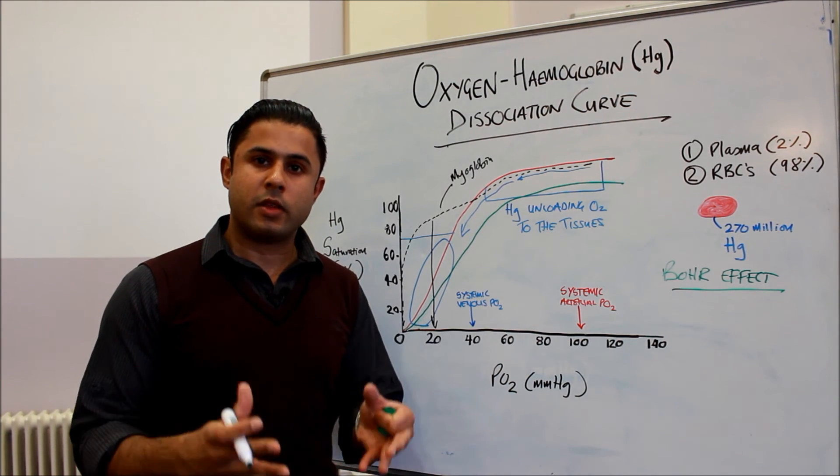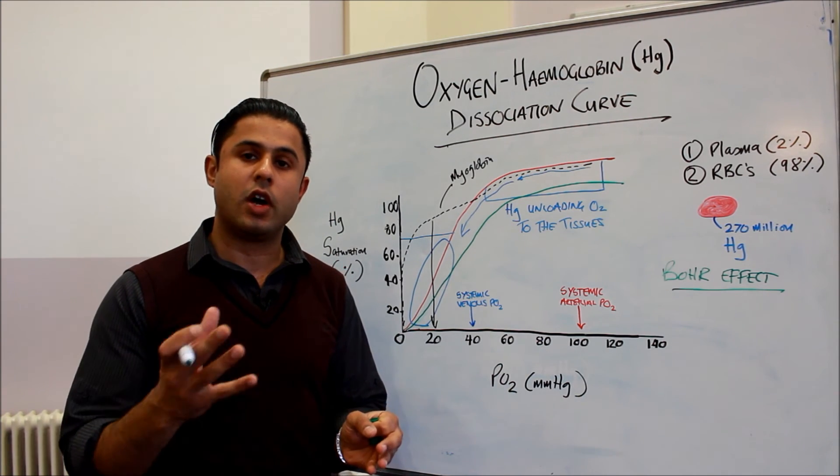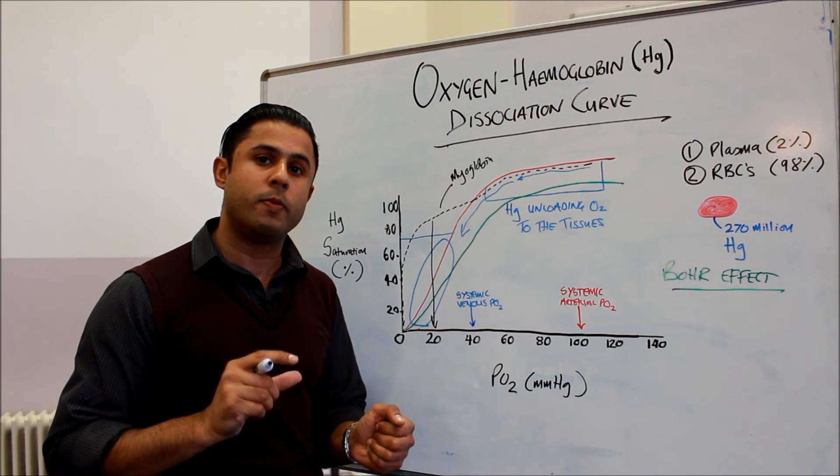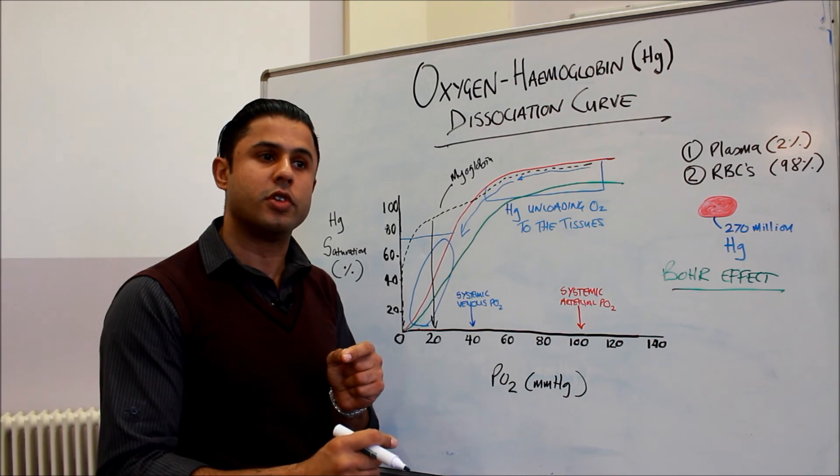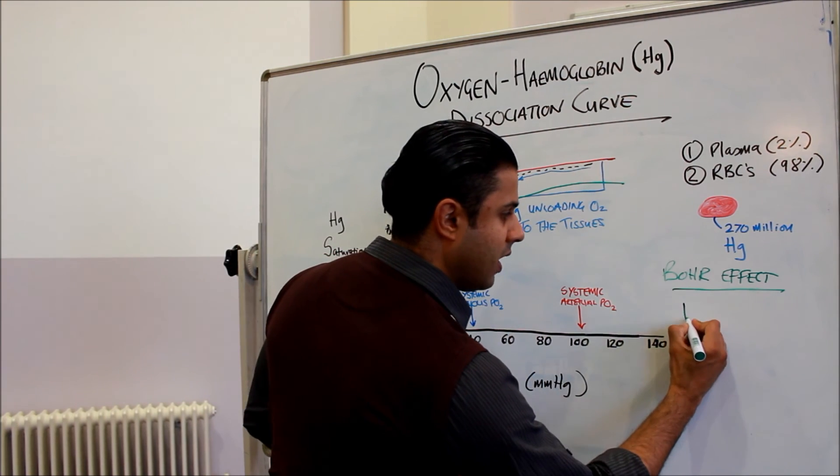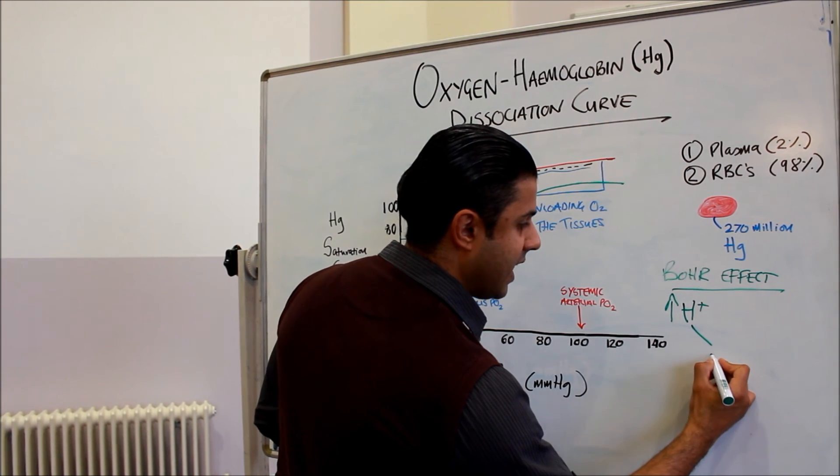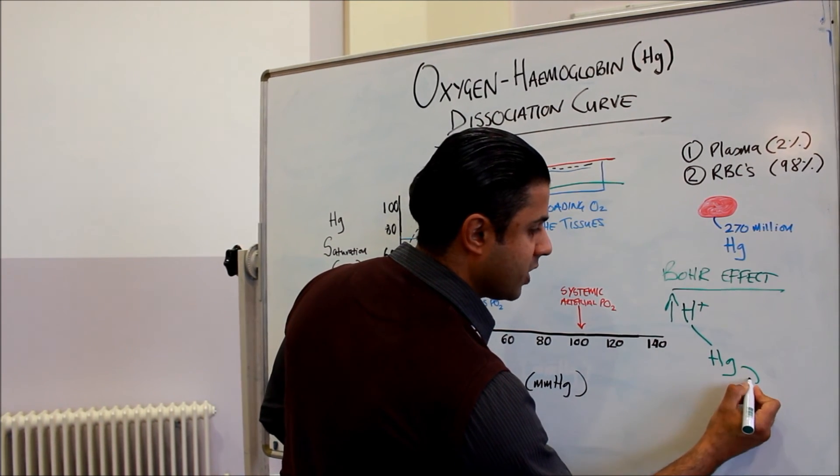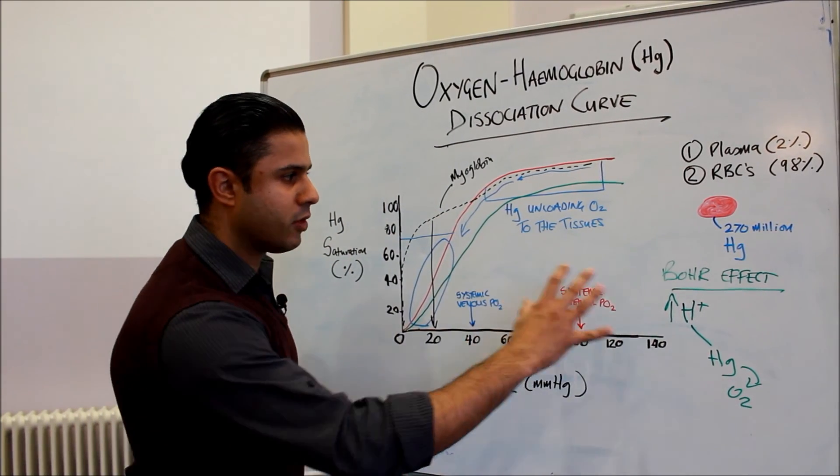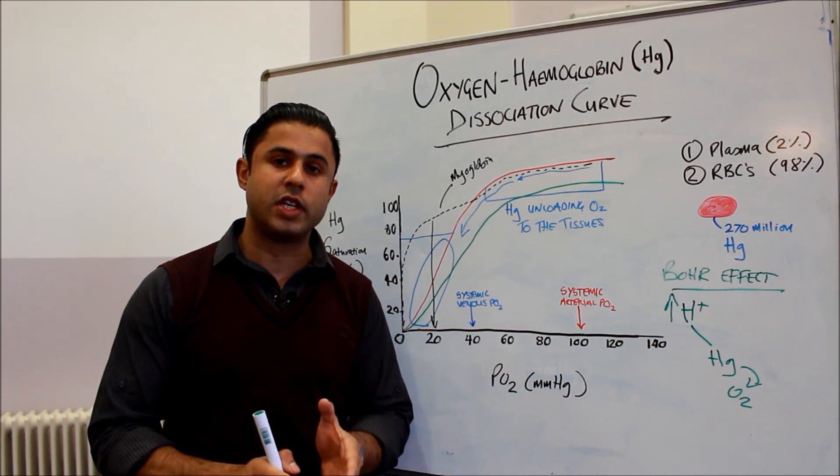Now why does that shift to the right? Well, we know from the production of carbon dioxide that it converts into carbonic acid, which dissociates into hydrogen and bicarbonate. Now what happens to the hydrogen is that it attaches to the hemoglobin, causing the hemoglobin to unload the oxygen. So essentially when we produce more CO2, we're also producing more hydrogen. So the increase in hydrogen causes hydrogen to attach to the hemoglobin, which causes oxygen to be unloaded to the tissues earlier. And that's how the Bohr effect occurs, and that's how it translates to a shift in the oxygen hemoglobin dissociation curve to the right.